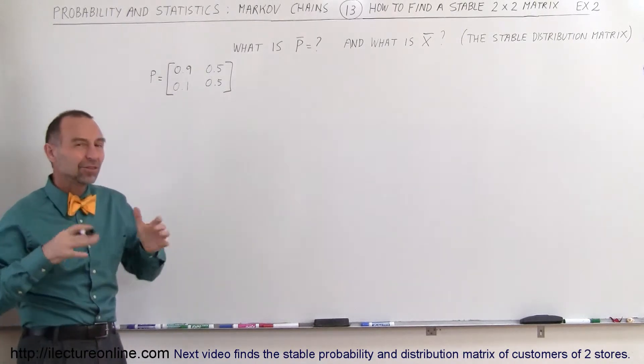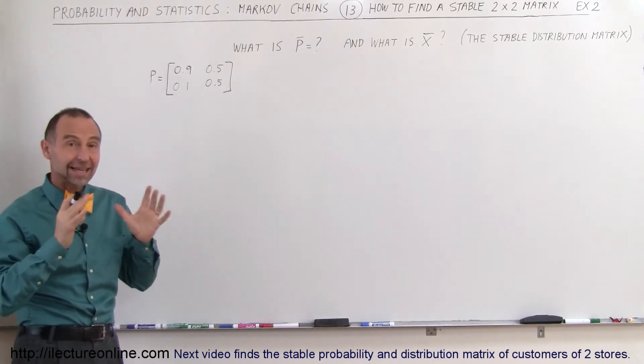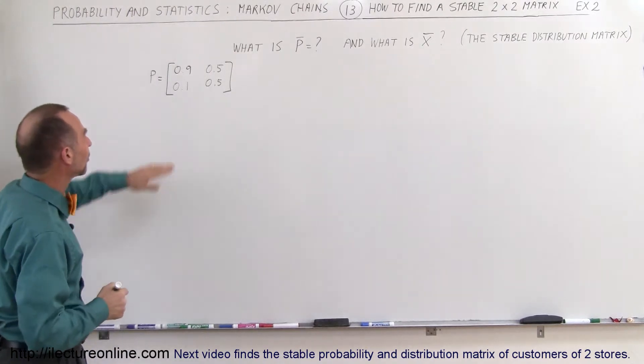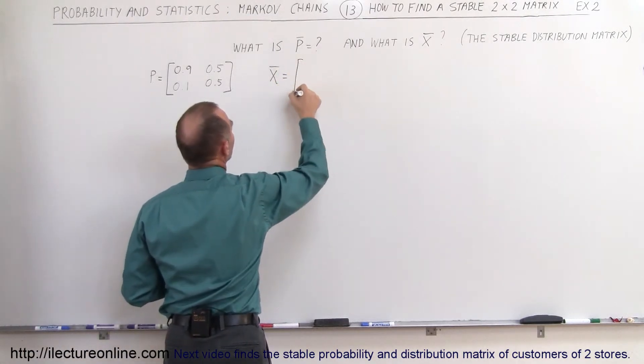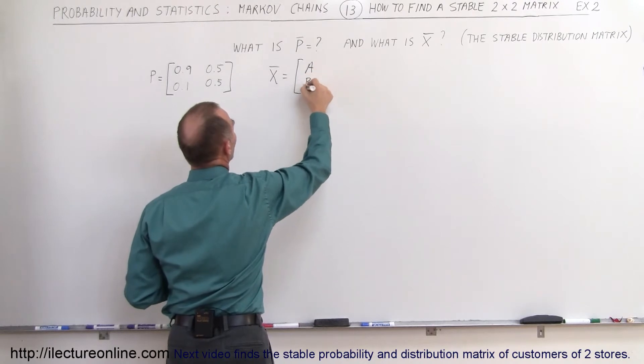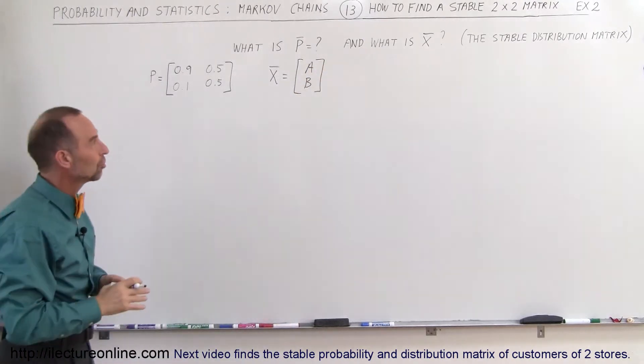Again, it helps to see it a couple times with a few different numbers so that you see, okay, that's the technique, I know how to use that now. So we're going to assume that the stable distribution matrix is going to be something like A and B, so we need to find the final states of A and B to find the stable distribution matrix.